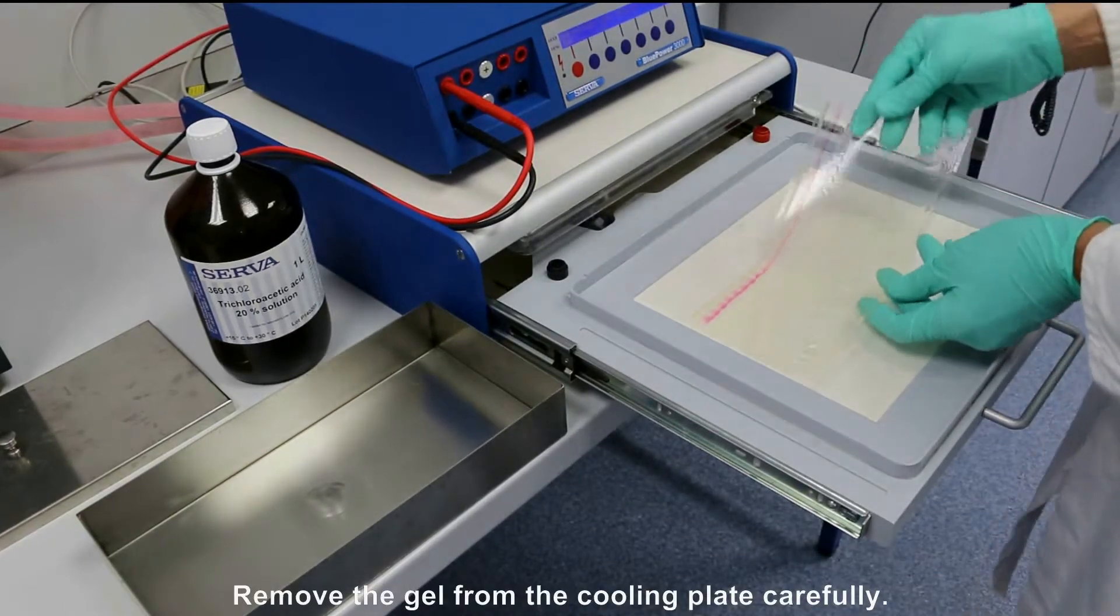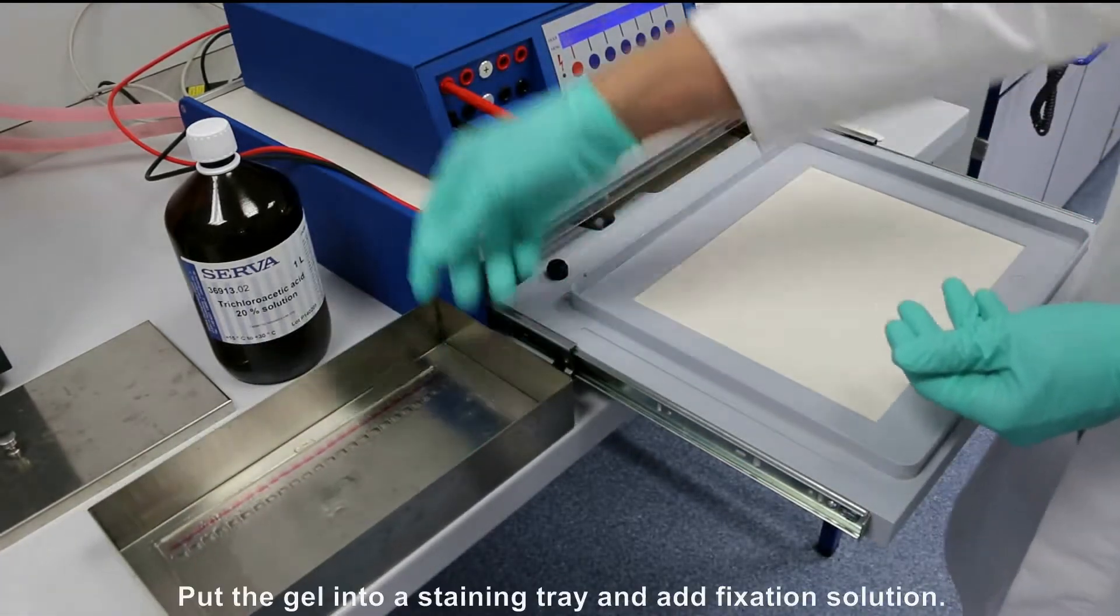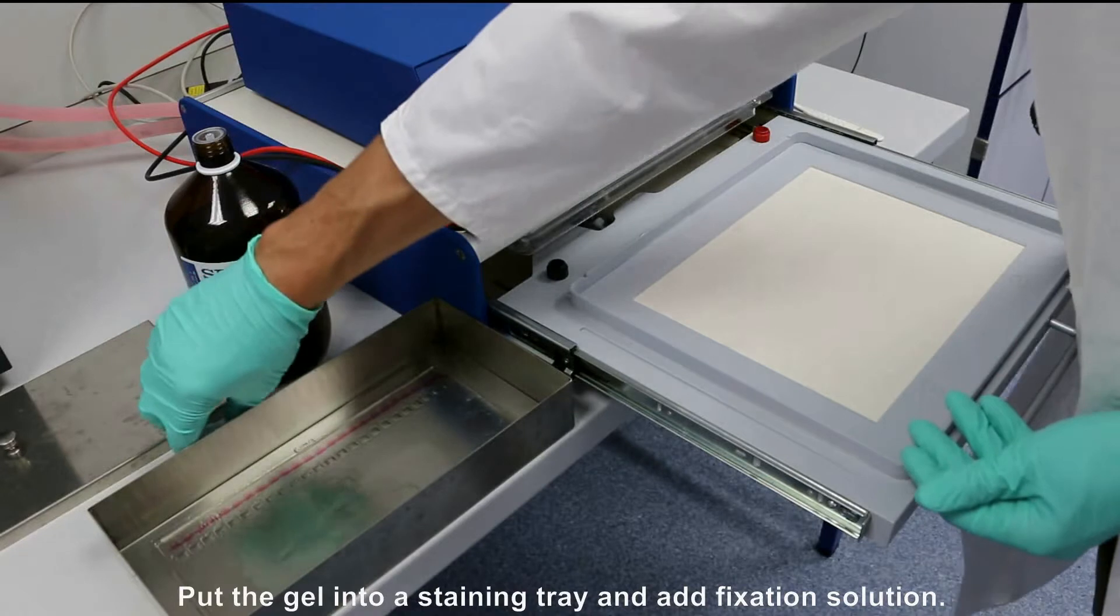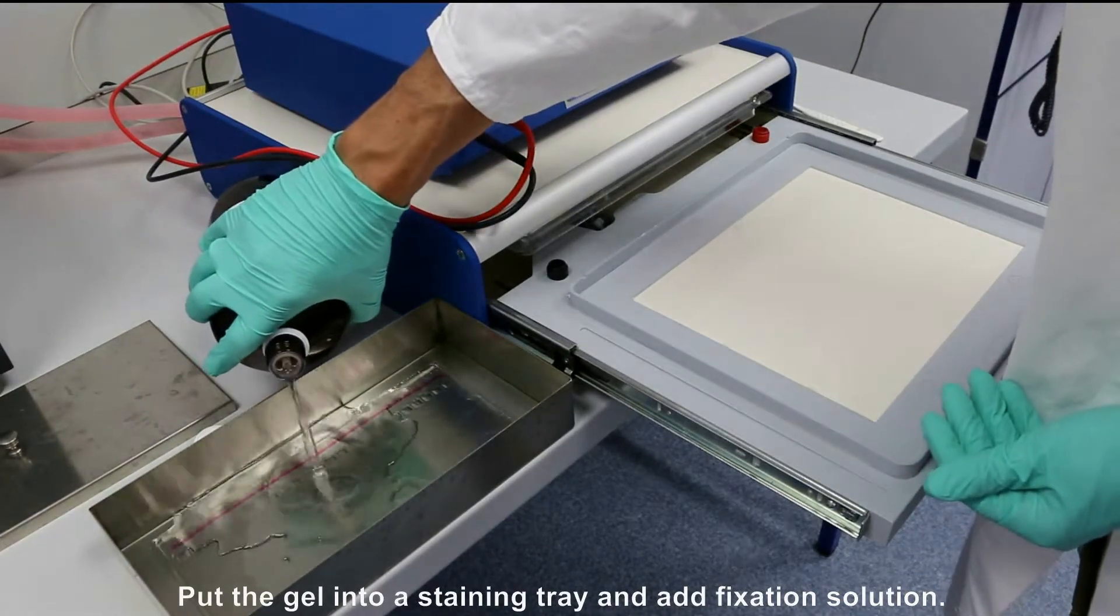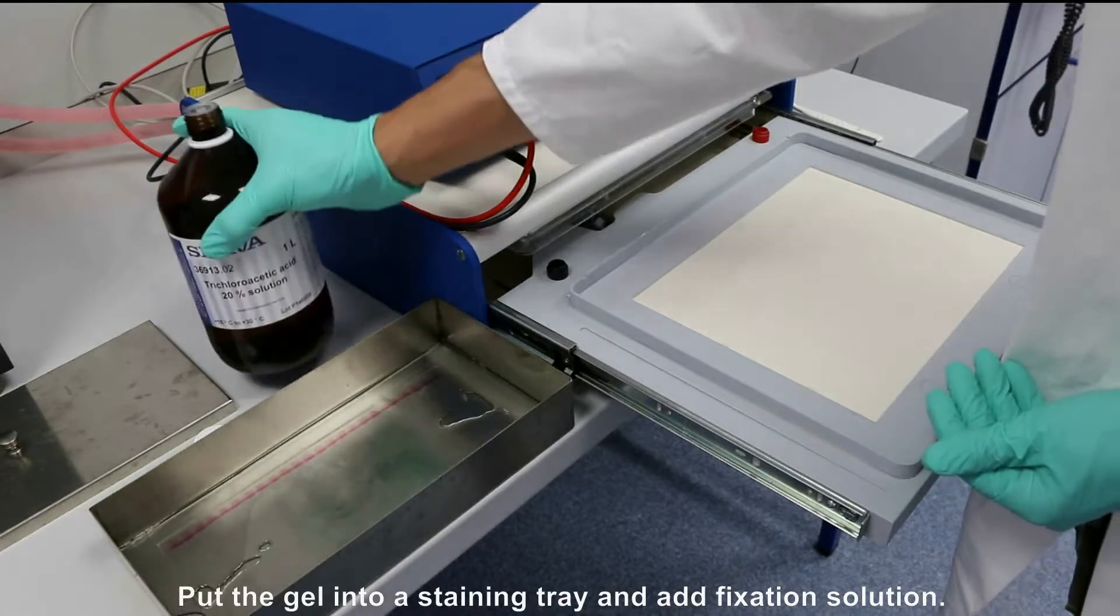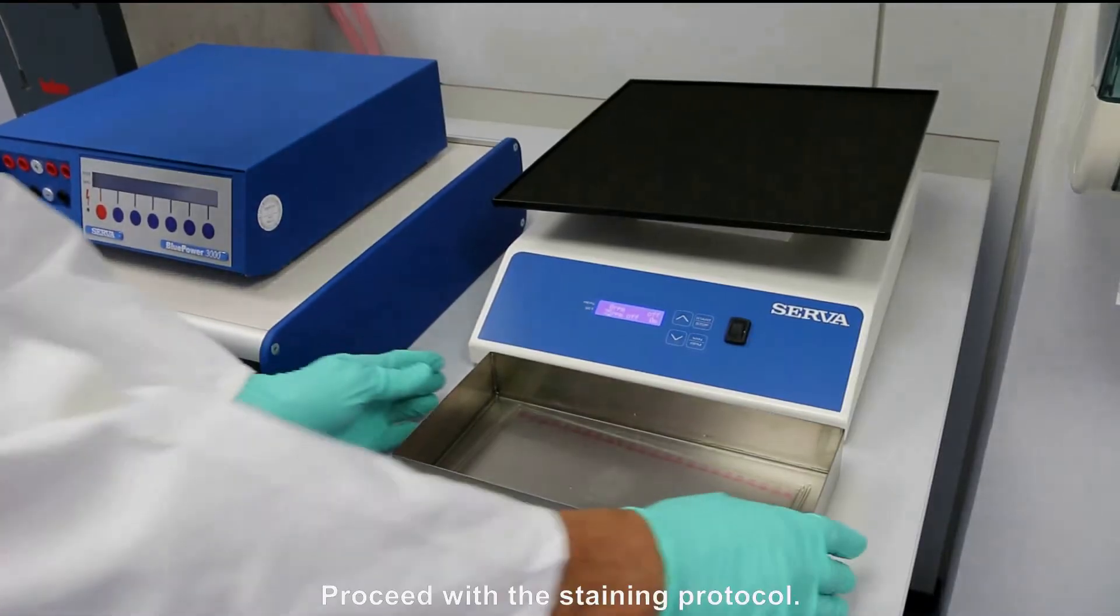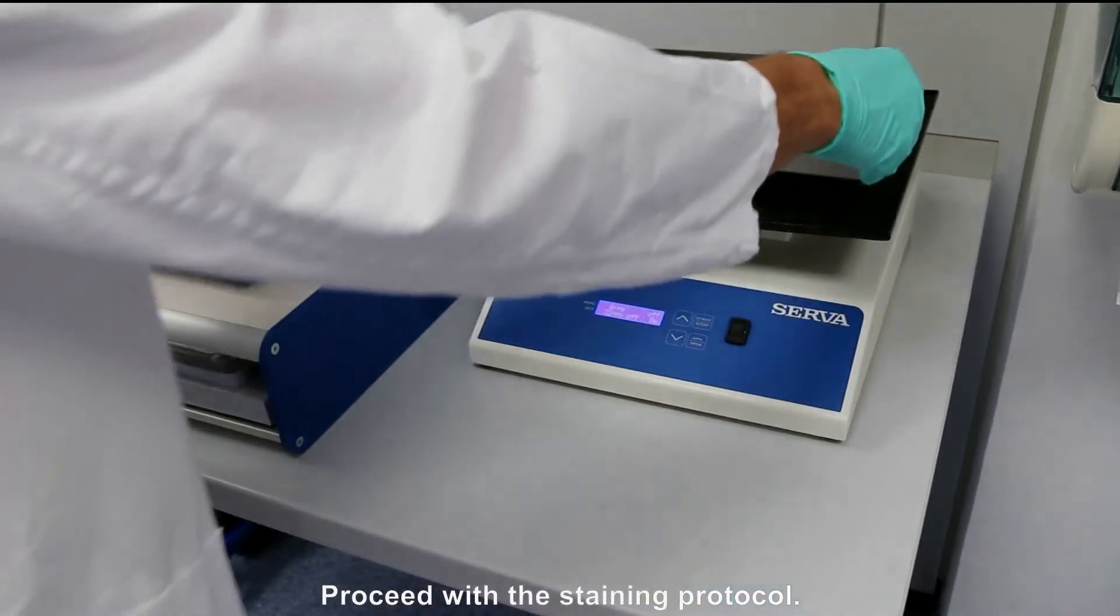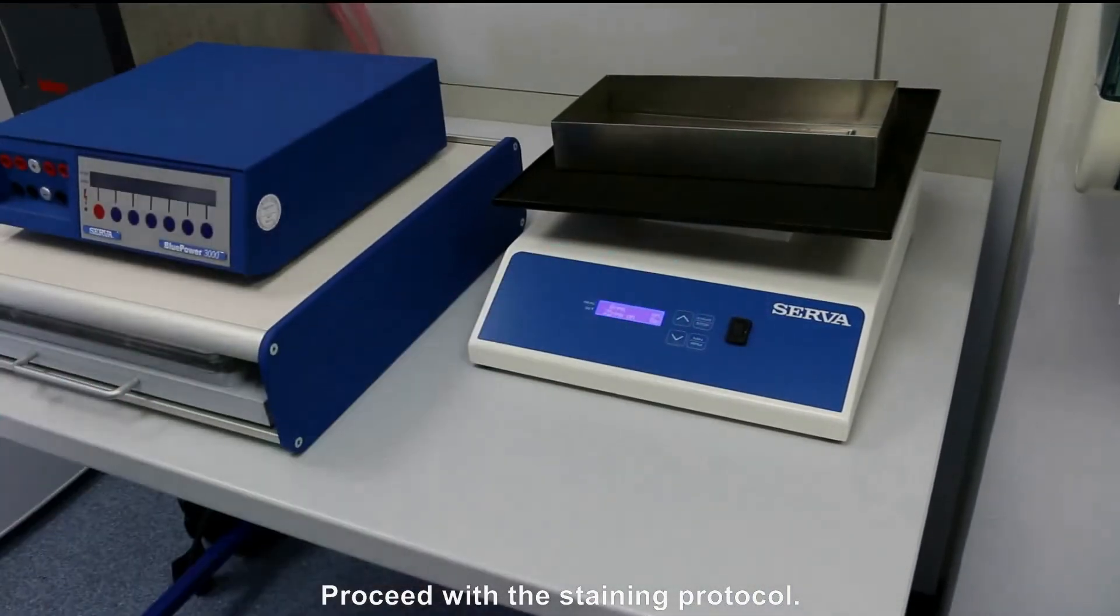Remove the gel from the cooling plate carefully and place it in a staining tray. Immediately add fixation solution. Place it on a 3D shaker and proceed with the staining protocol.